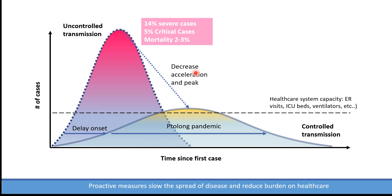It is important to know that without any intervention, the epidemiologic curve will increase in the acceleration phase up to the peak before cases will decline and the pandemic will be contained. However, there will be a huge surge of cases, especially critical care cases, and the burden on the health care system will be tremendous. Those cases will exceed the capacity of the health care system. So interventions are taking place, and the aim is to flatten that epidemiologic curve by decreasing the acceleration, decreasing the peak, and prolonging the pandemic, so cases will all fall below the health care capacity.